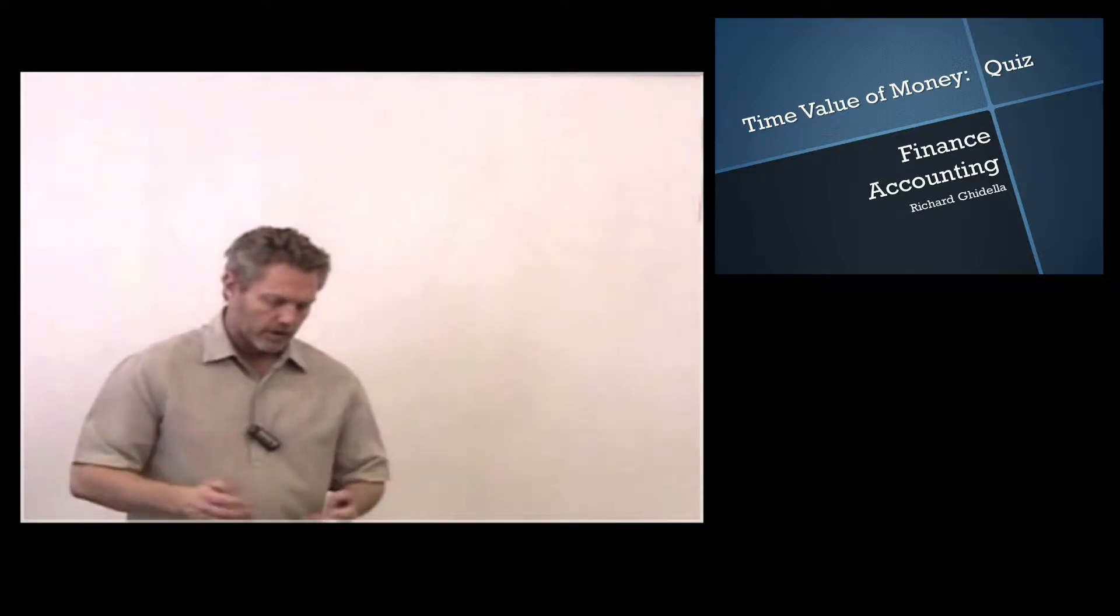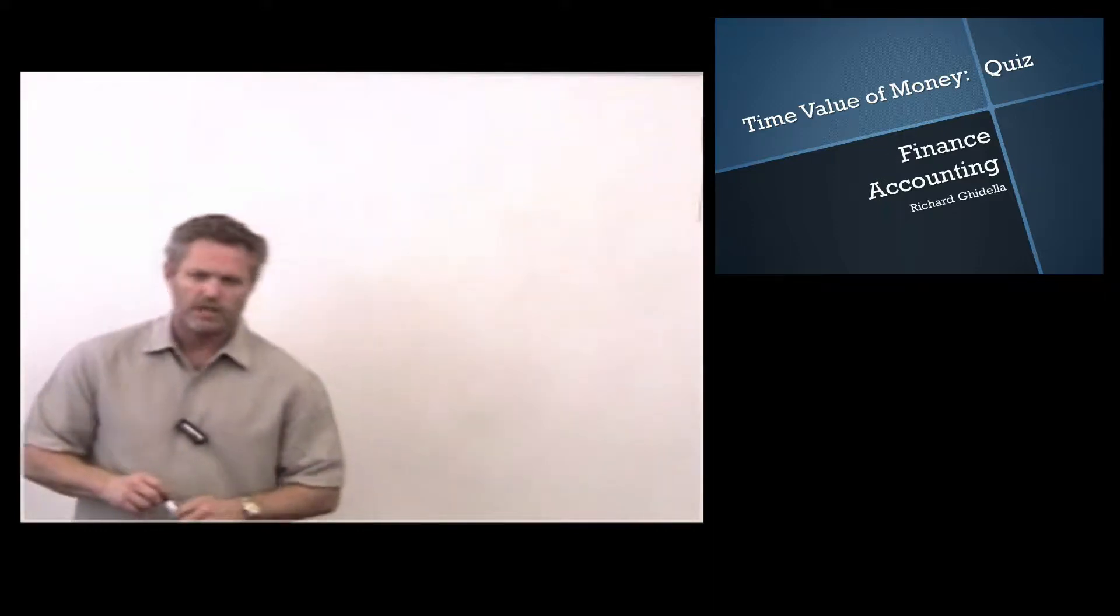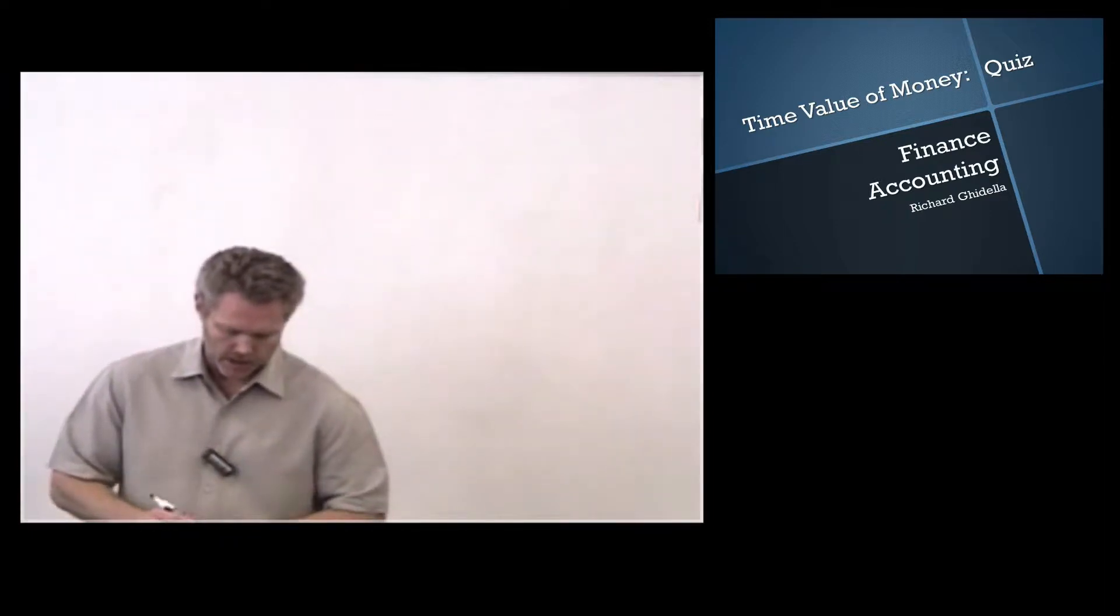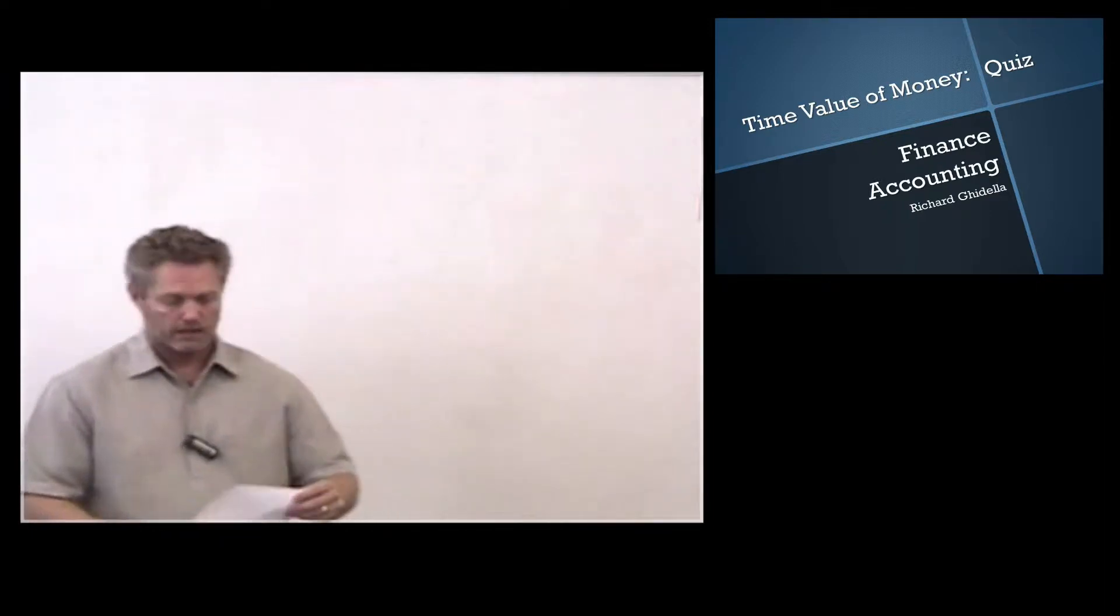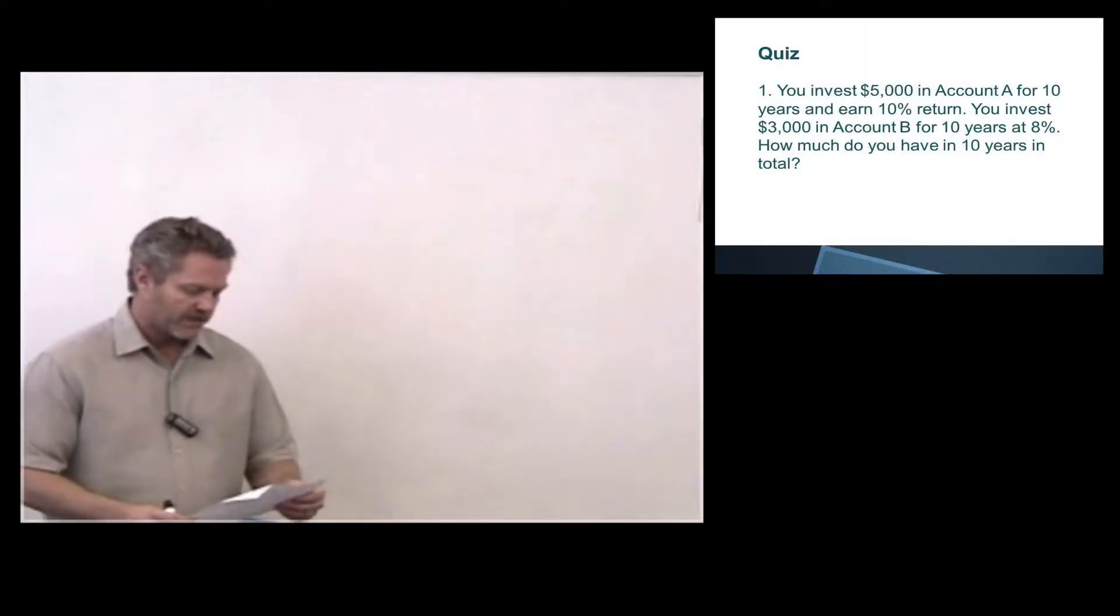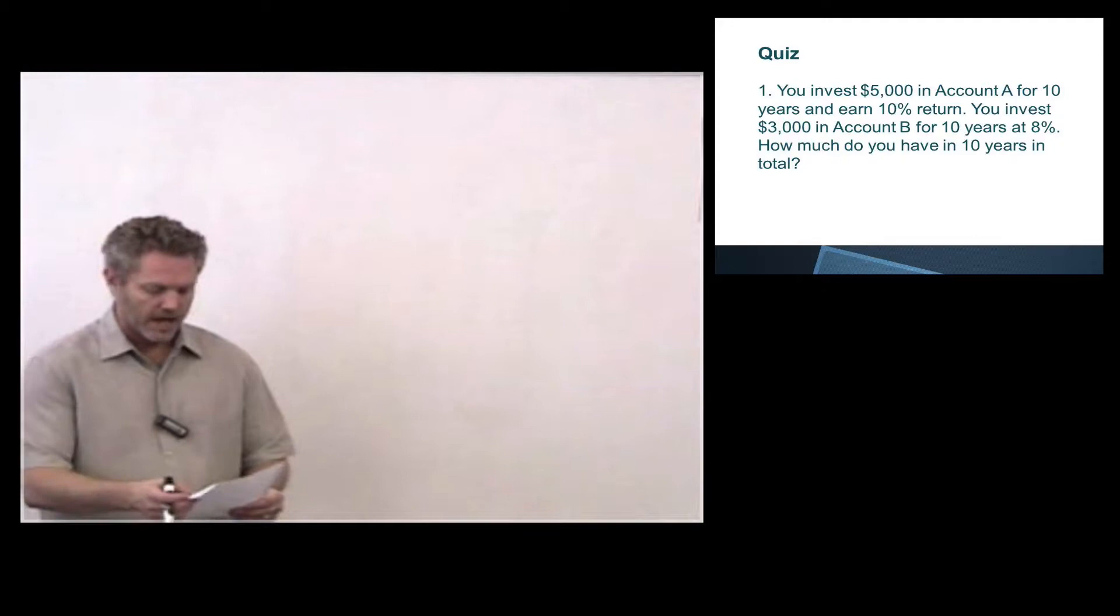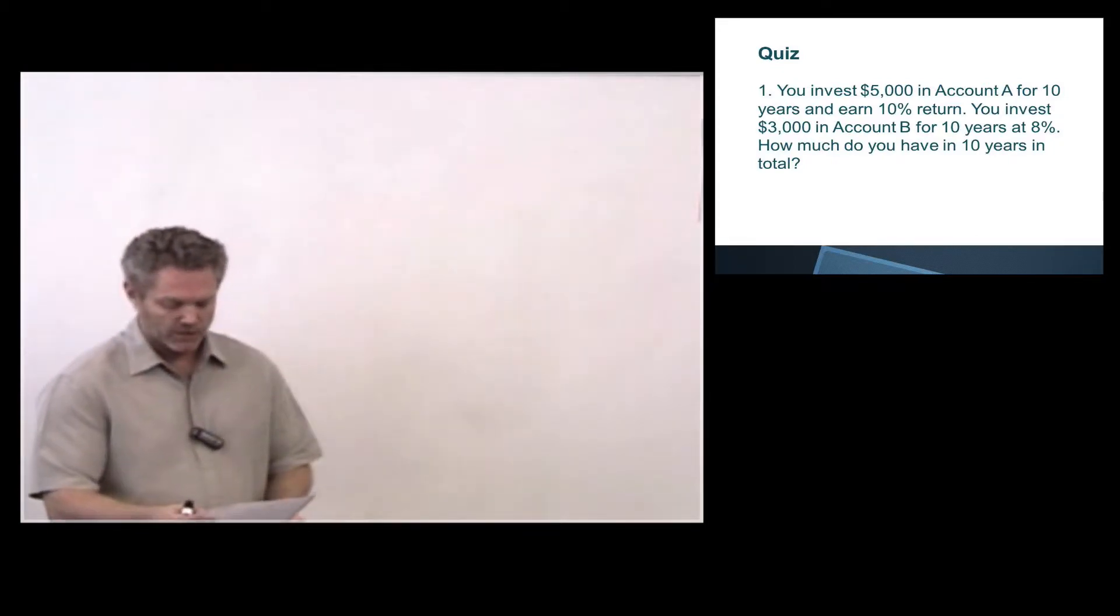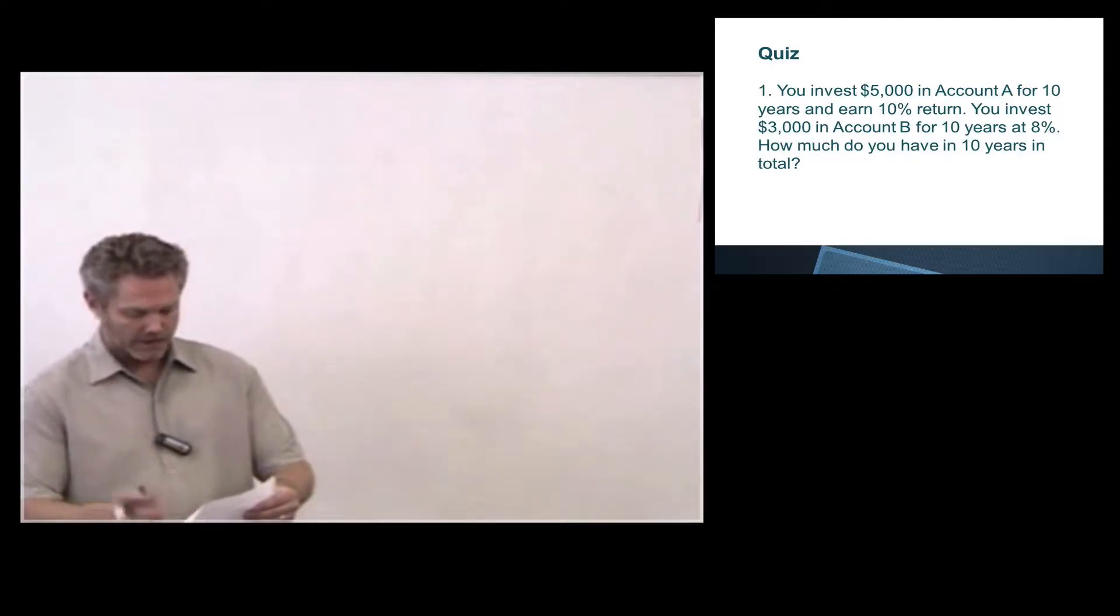Now we're going to go over the quiz that was on page 14 in your supplemental materials and how we go about calculating these. Question number one: you invest $5,000 in account A for 10 years and earn a 10% rate of return. You invest $3,000 in account B for 10 years at 8%. How much do you have in total?